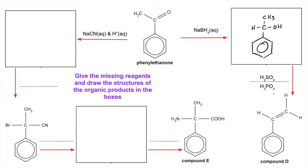Now the longer route: going to the left of phenylethanone, we're told it's reacted with a mixture of sodium cyanide and acid. That effectively creates hydrogen cyanide, which then reacts with the phenylethanone, making a hydroxynitrile, which is going to look like that.